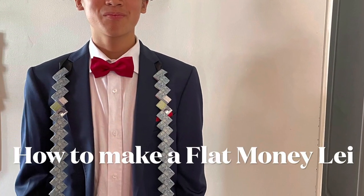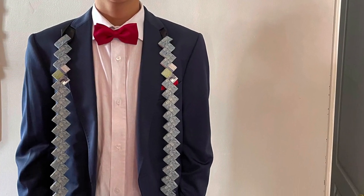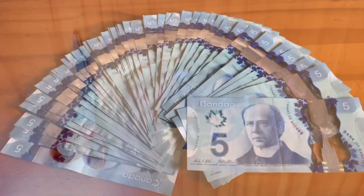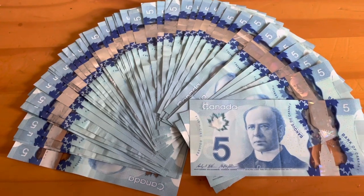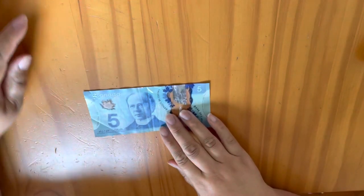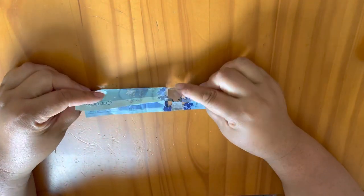Hi everyone, today we're going to be making a flat money lei. You'll need a pair of scissors, some ribbon, and of course bills. We chose $5 bills and we also put in some $10s and $20s. So let's get started.